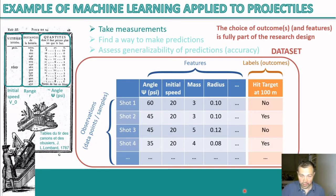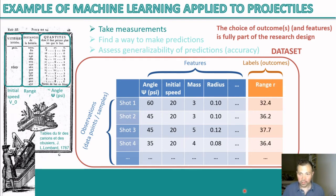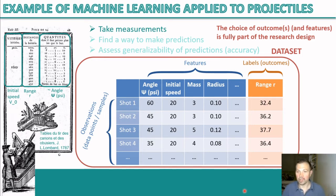For example, instead of having a binary outcome of whether we hit a target at 100 meters, a better outcome could be the range, because this way you could generalize to different situations and better understand your system.